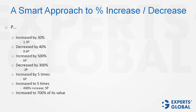Increased to 700% of its value: p becomes 7p, and the increase is only 600%, not 700%. Increased by 700% of its value: the delta is 7p, so p becomes 8p.